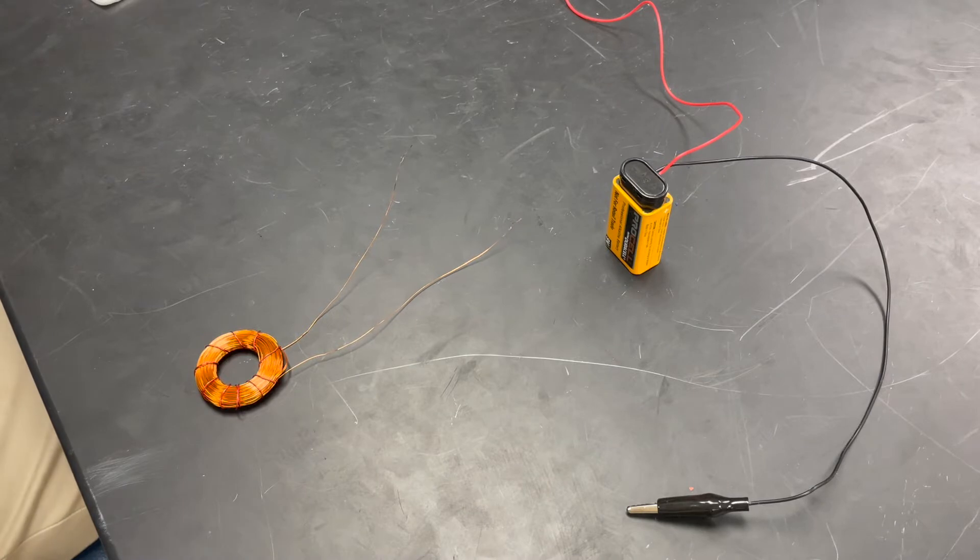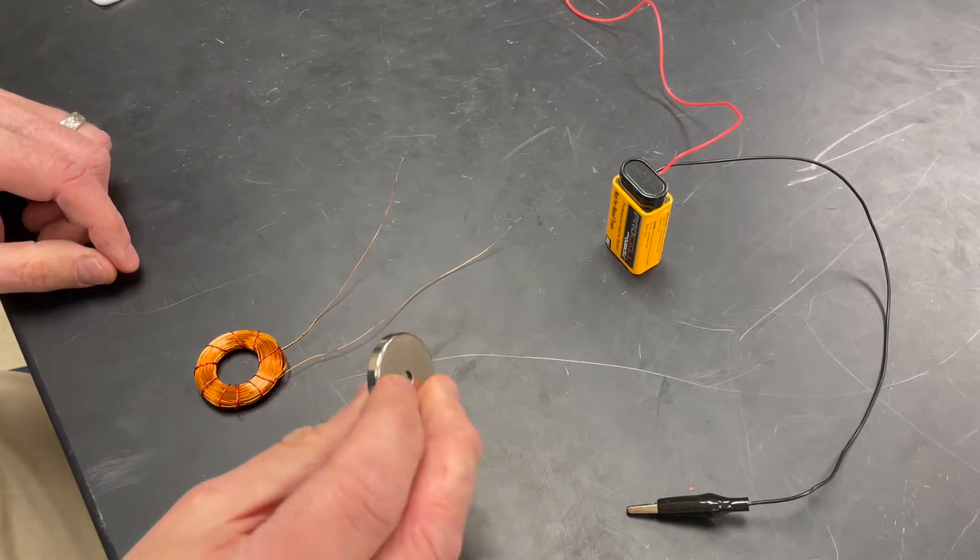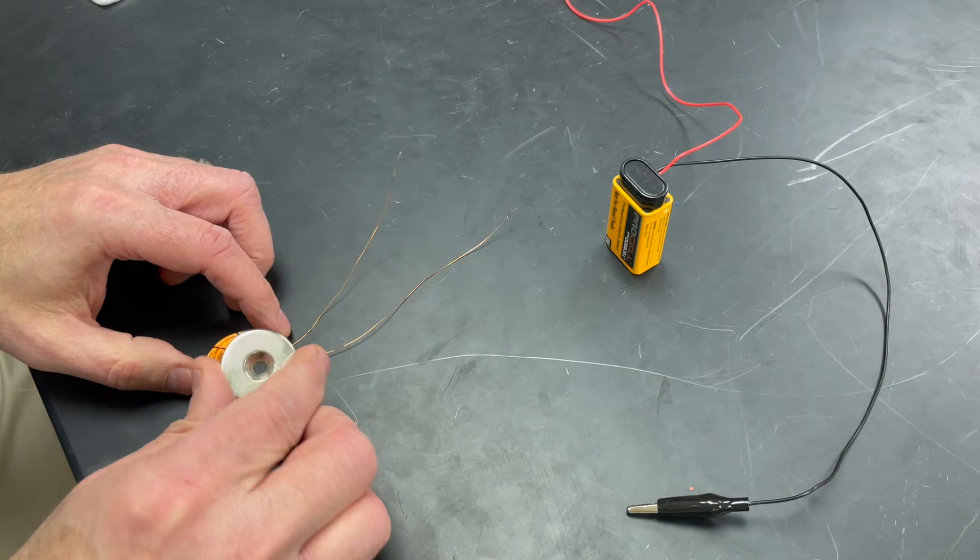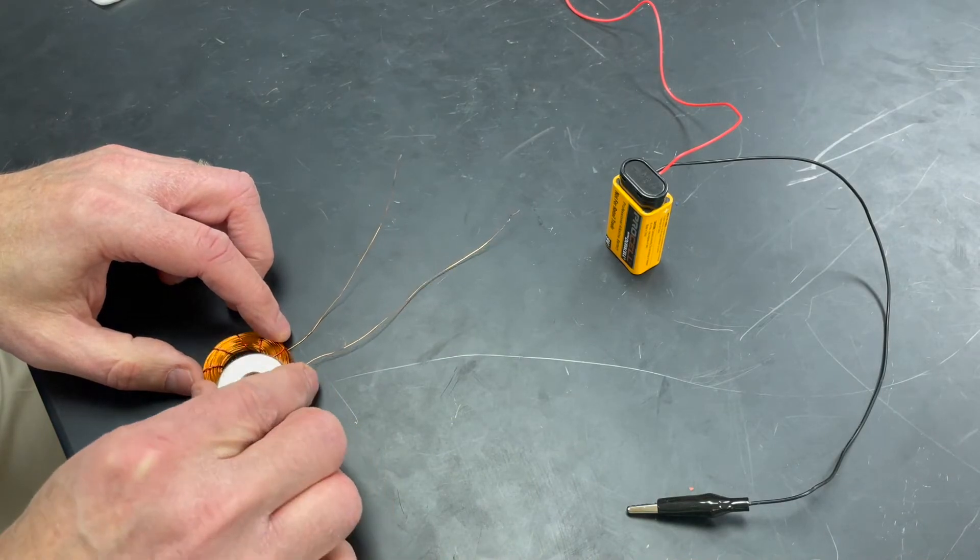Copper wire is not magnetic and it will not stick to a magnet. Here's a neodymium magnet, and you see it does not stick to the copper coil.